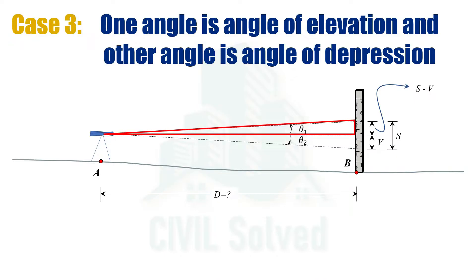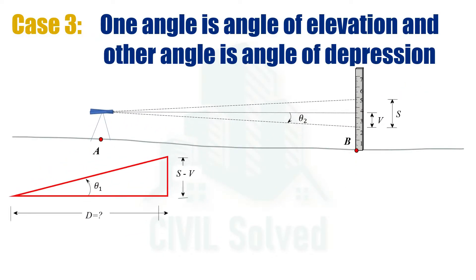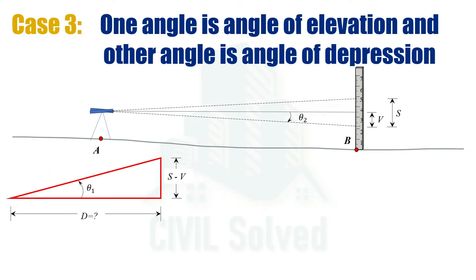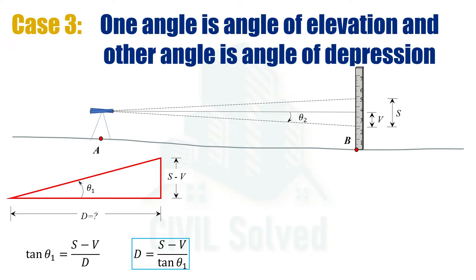In order to calculate the horizontal distance, we are going to consider this right angle triangle. In this right angle triangle, the angle is θ₁, the base is d, and the perpendicular is the difference of s and v. Taking the trigonometric ratio that contains perpendicular and base, which is tan, tan θ₁ would be equal to (s minus v) over d. By cross-multiplying, we will have the equation for d.